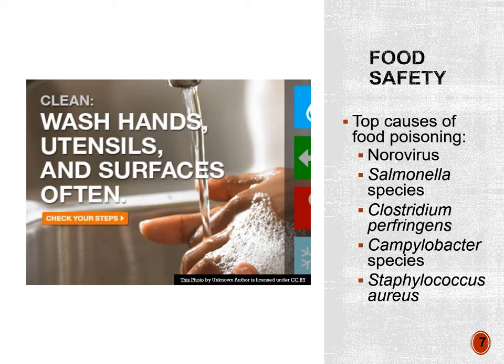Salmonella is typically from raw or uncooked poultry; we also see it in eggs. Symptoms include nausea, vomiting, diarrhea, fever, and abdominal cramping. A few years ago, there was an E. coli outbreak at Chipotle where all locations were closed because the ground meat was raw and undercooked. E. coli symptoms include abdominal pain and diarrhea. As a nurse, the two most important precautions to prevent the spread of foodborne illness among hospitalized patients are washing your hands before serving food and washing your hands after using the bathroom.